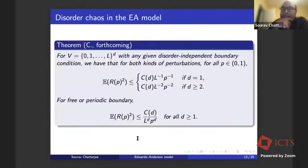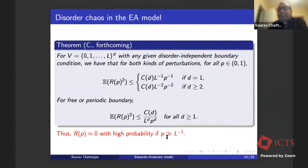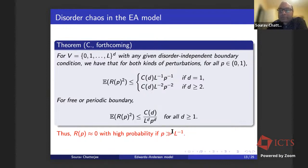Here is the theorem. Given V as before, for both kinds of perturbations and for all p, the expected overlap squared is bounded by 1/(Lp) if D = 1, and 1/(L²p²) if D ≥ 2. For free or periodic boundary conditions this improves to 1/(L^D · p^D) for every D. Thus the overlap is close to zero with high probability as long as p is much bigger than 1/L. I don't know if this is the correct threshold — the physics literature suggests it may be smaller — but at least for small p the ground state becomes nearly orthogonal to the one that was there originally.